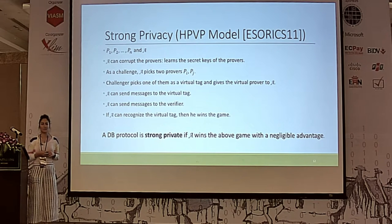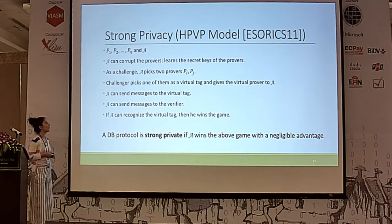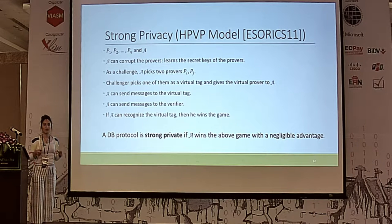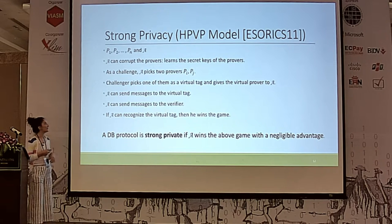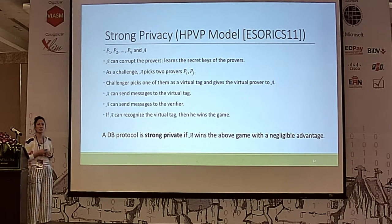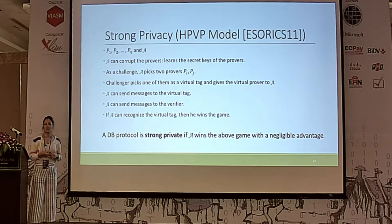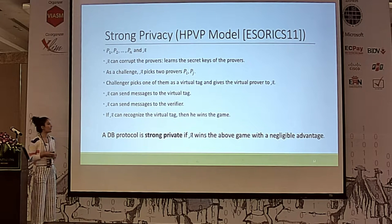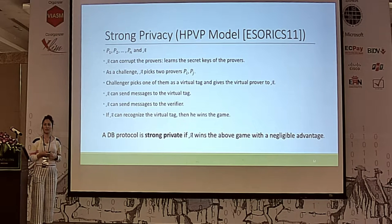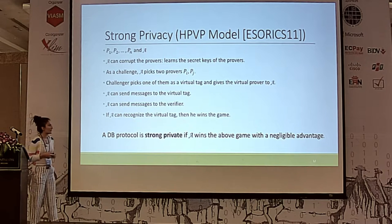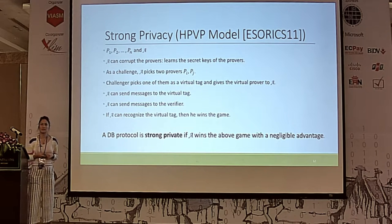Lastly, I want to define privacy briefly. We use the HPVP model. Basically, we have many provers and adversaries. The adversary can corrupt any provers, meaning he can learn their secret key. At some point he picks two provers as a challenge, and the challenger simulates one of them. If the adversary can recognize which one is simulated, he wins. If a distance bounding protocol is strong private, the adversary's advantage in this game should be negligible.